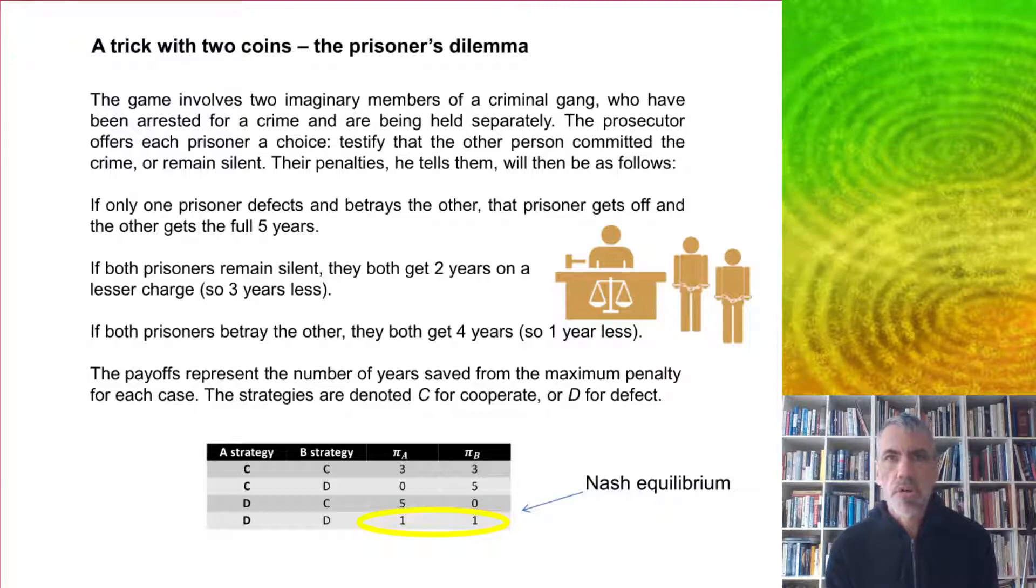They can testify that the other person committed the crime or they can remain silent. Their penalties will then be as follows.